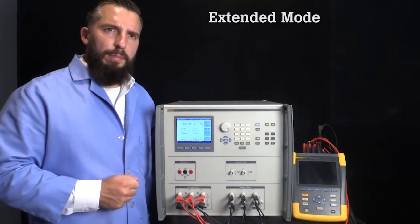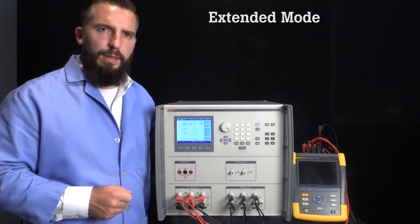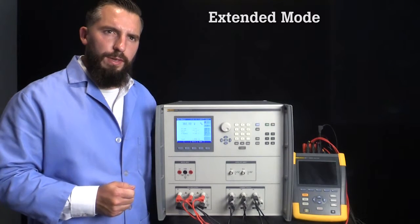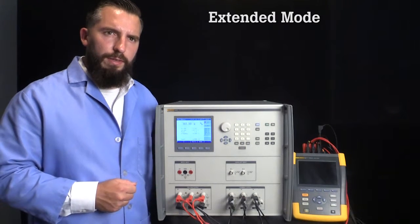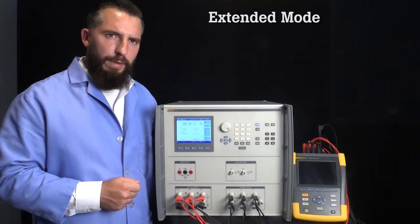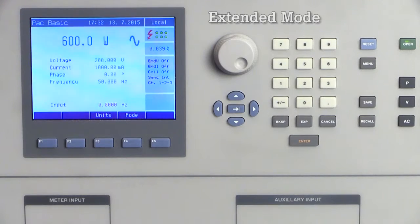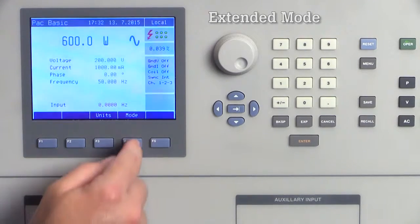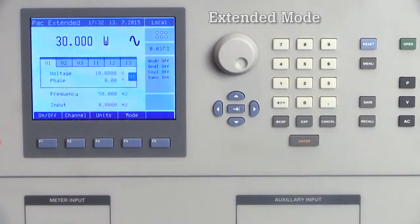You can use the extended mode for applications that require the ability to vary each phase independently. This allows you to configure the voltage, current, and frequency for each phase. This is beneficial for troubleshooting or testing three-phase meters using different voltages, currents, or phase combinations per phase. For example, if you select the extended mode, you will be shown a menu that shows six channels: three voltage and three current.